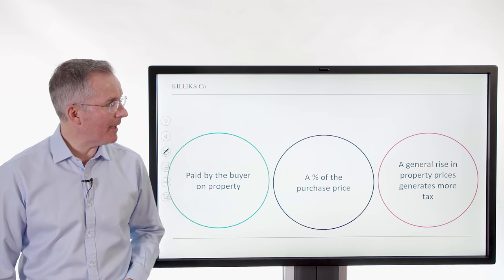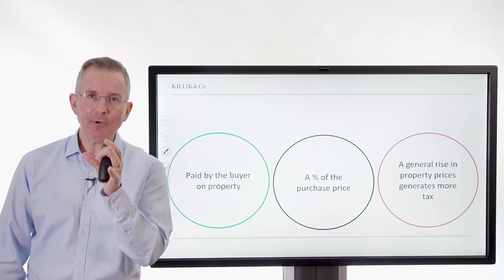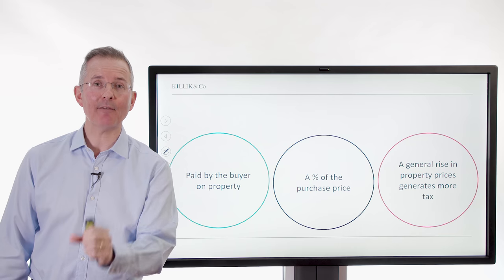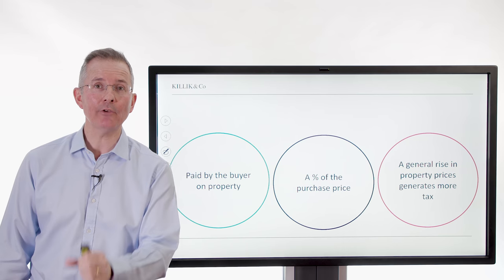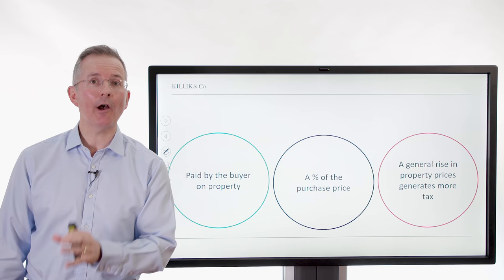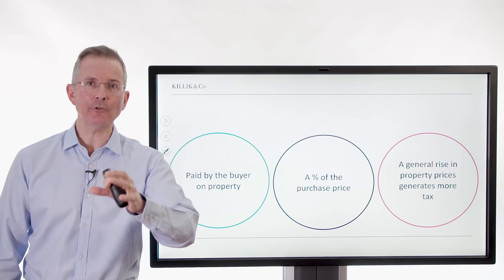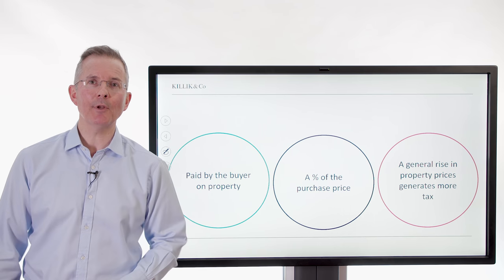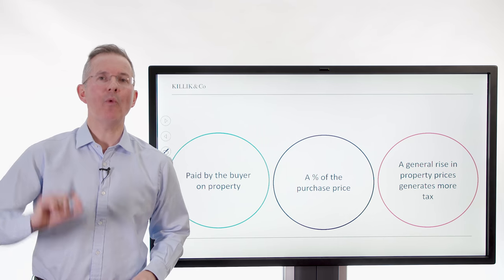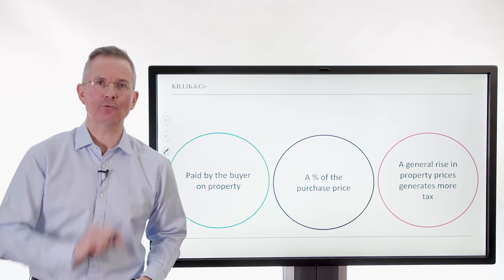Here's the sneaky bit: because the percentages and the values on which they're based are fixed and have been for a few years, if property rises in value — which over the long term it tends to — the government basically get more money without having to change tax rules.